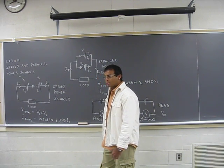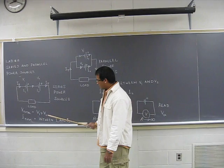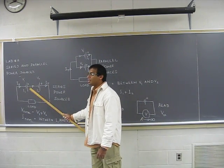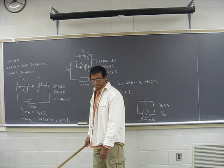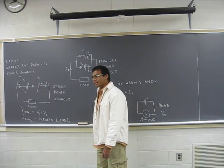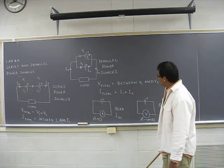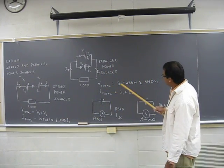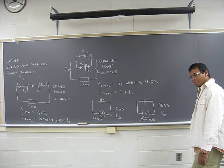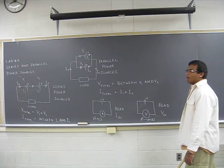If they are not the same, one is going to be bigger than the other, so it will be somewhere between them. Same goes for parallel power sources - in that case the voltage is going to be somewhere between V1 and V2.